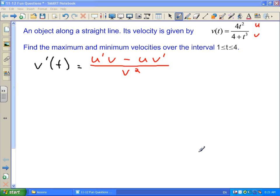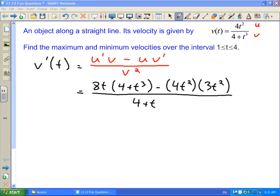Let's just work out what that is. u' is going to be 8t, v is 4 + t³, and then we're going to subtract 4t² and multiply it by 3t², which is the derivative of v. All of this is going to be divided by (4 + t³)².